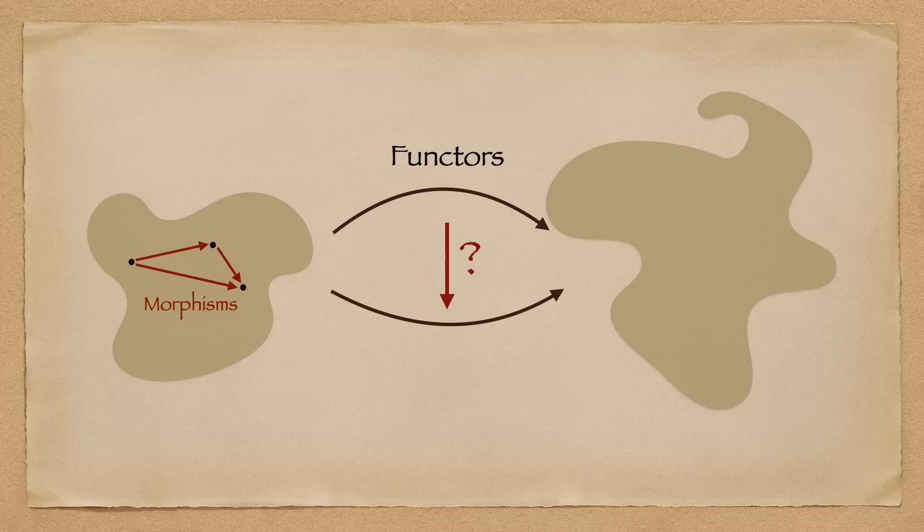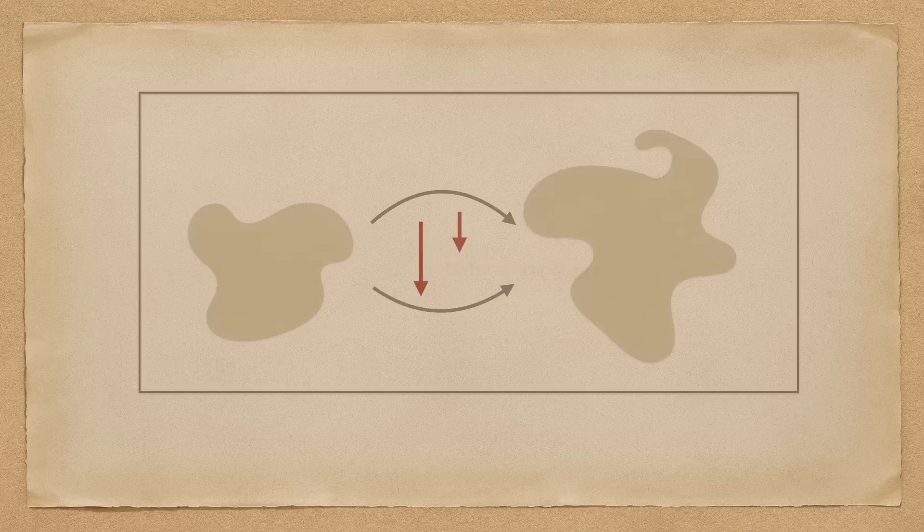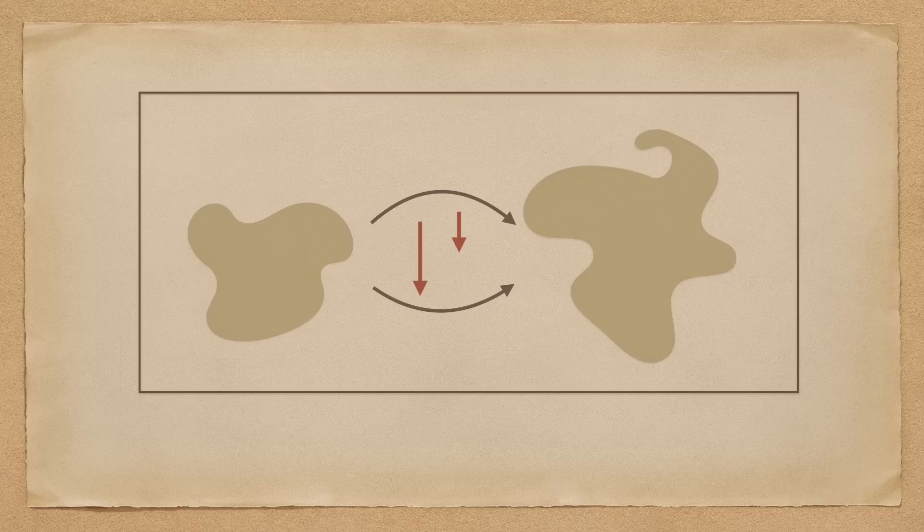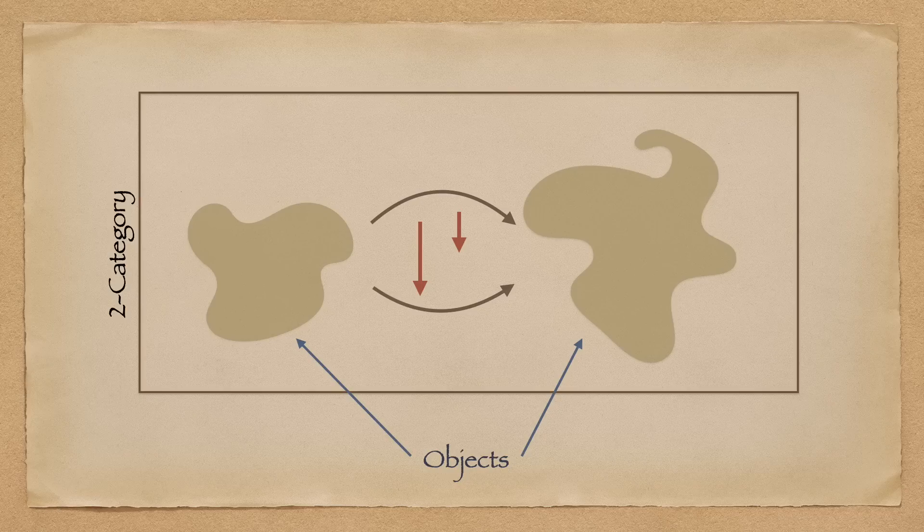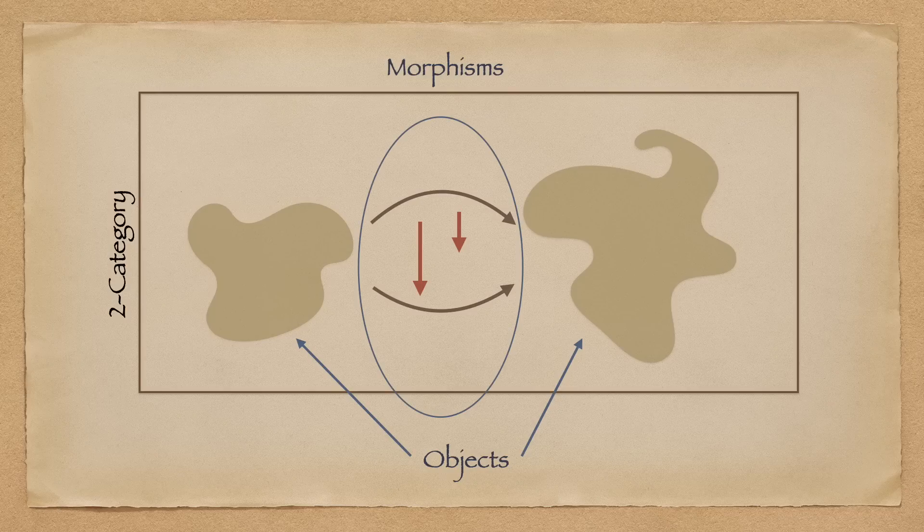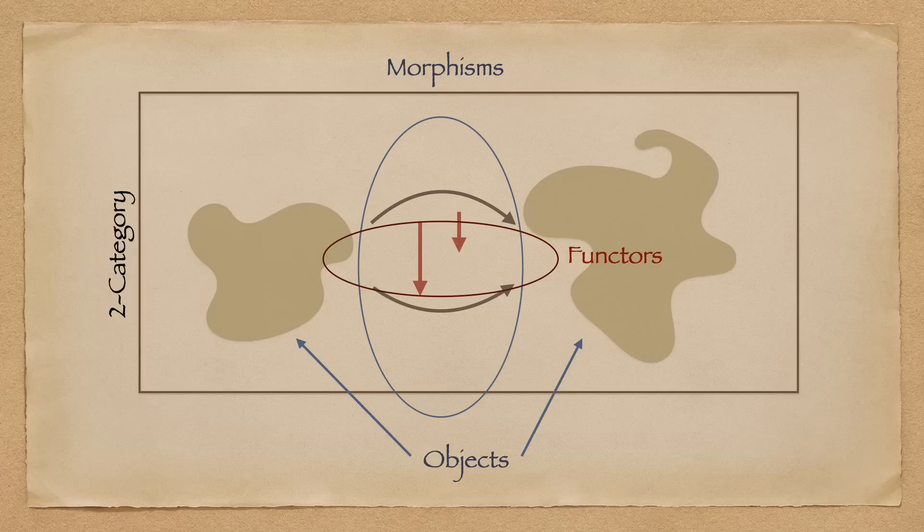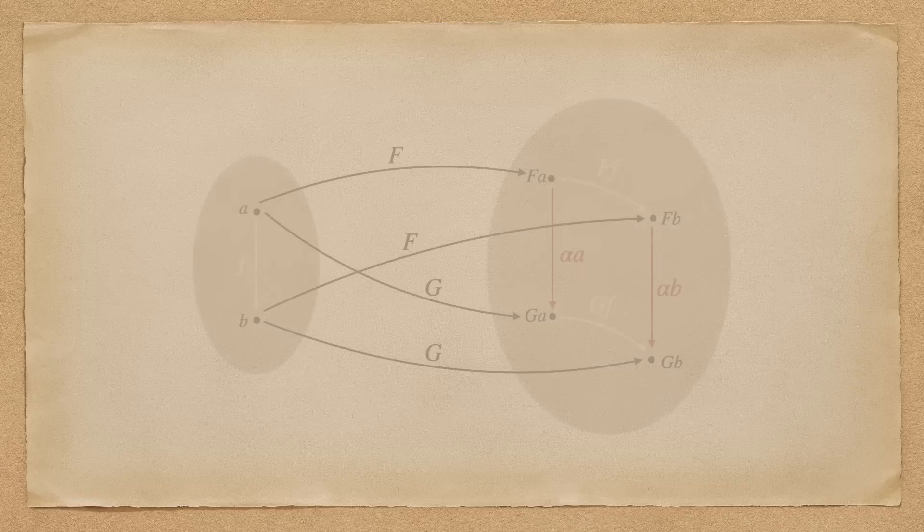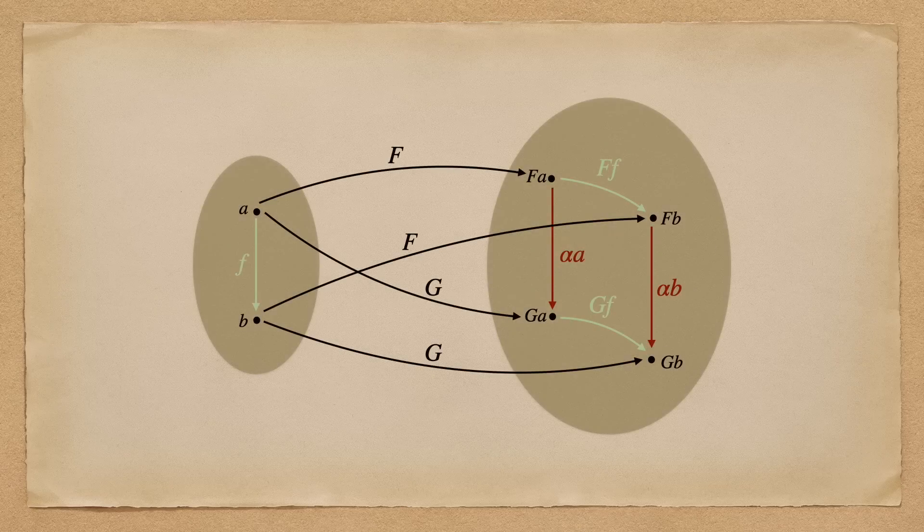Indeed, there are arrows between functors called natural transformations, which continuing with our analogy would be bridges between bridges, I guess. And so what we have now is a two category, in which our objects are categories, our morphisms are functors, and our functors are the maps between morphisms aka natural transformations, which satisfy some properties, but don't worry about that.